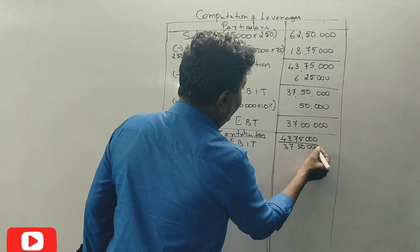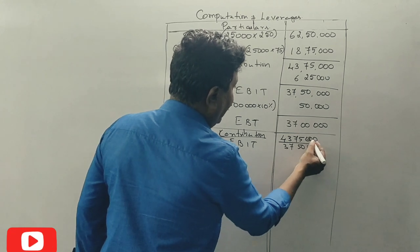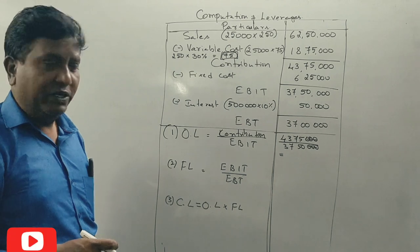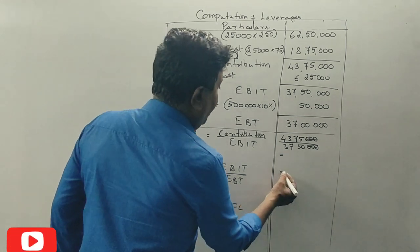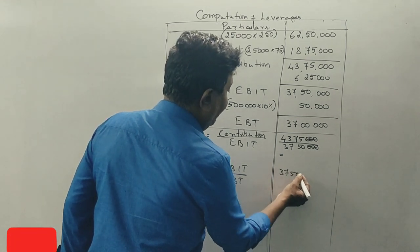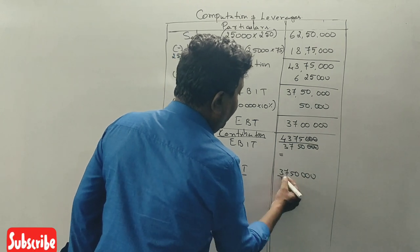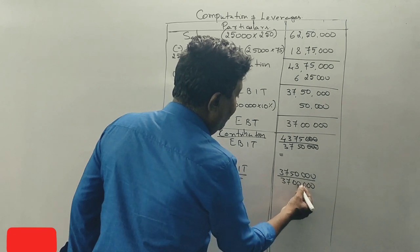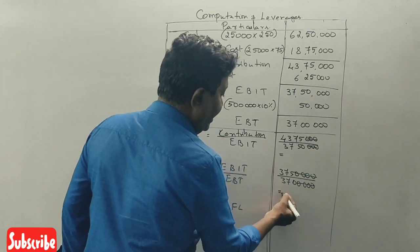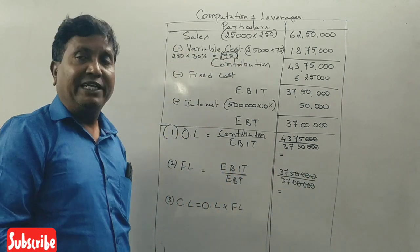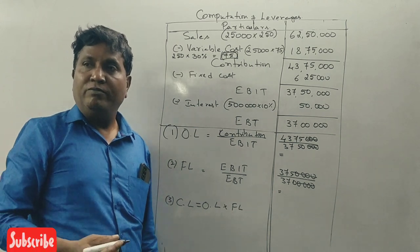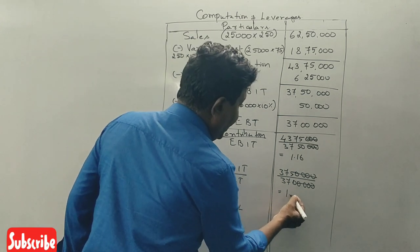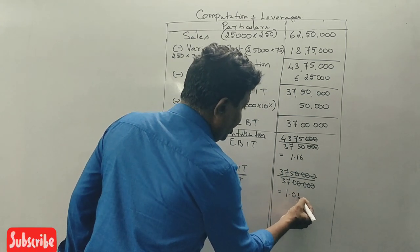EBT: EBIT is Rs. 37,50,000 minus interest Rs. 50,000, so EBT is Rs. 37,00,000. Operating leverage is contribution divided by EBIT: 1.16 times.